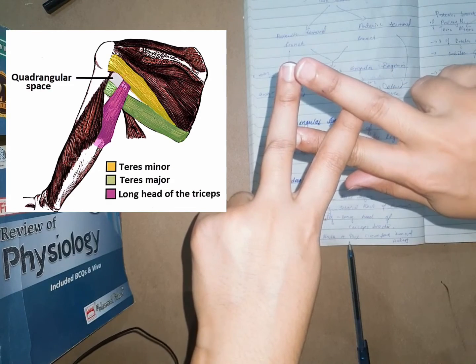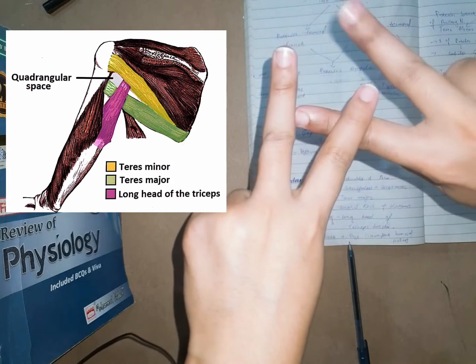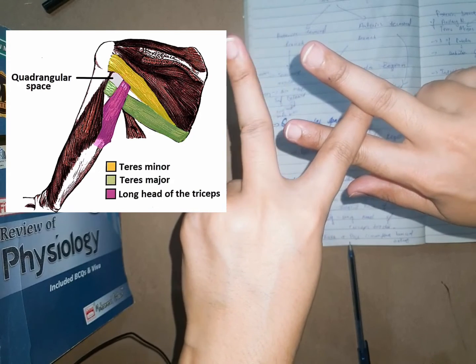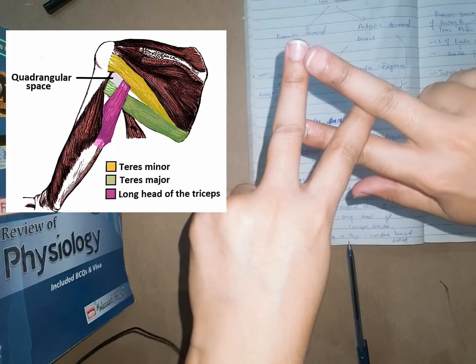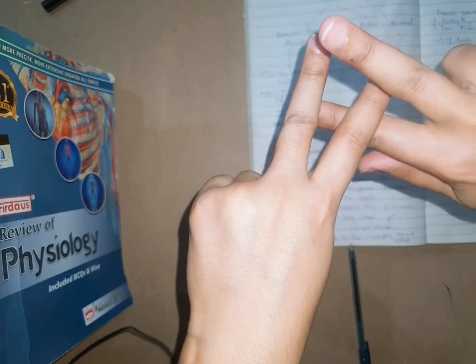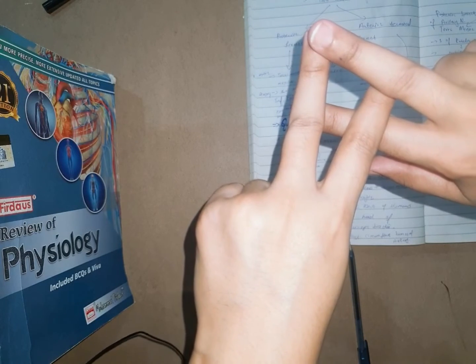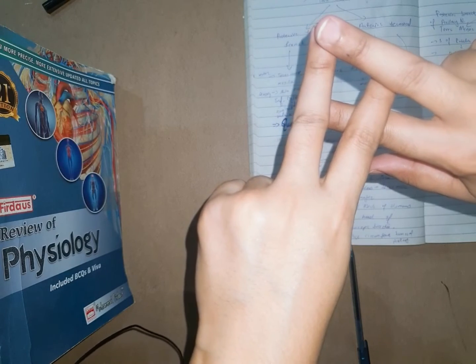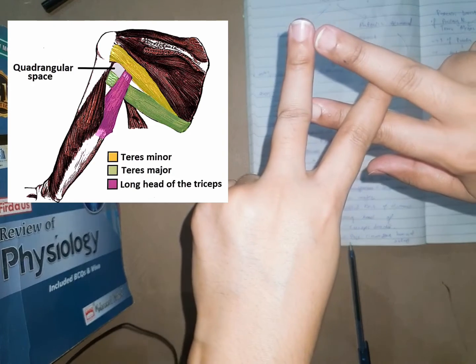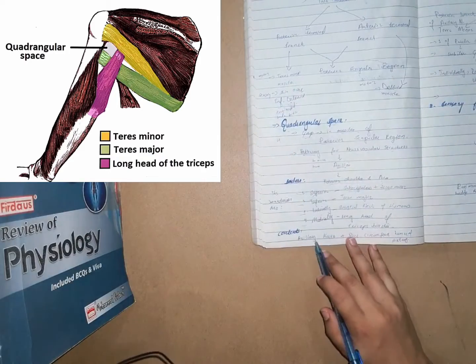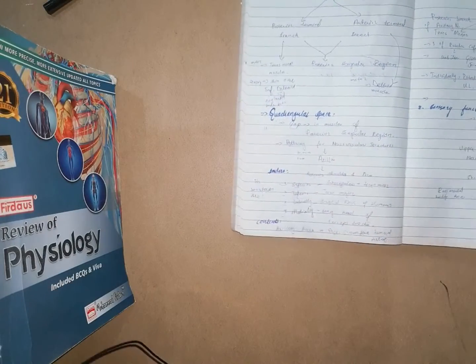To summarize the quadrangular space borders: the superior border is formed by the teres minor muscle and the subscapularis muscle. The inferior border is formed by the teres major muscle. The medial border is formed by the long head of the triceps brachii muscle. The lateral border is formed by the surgical neck of the humerus. The contents are the axillary nerve and the posterior circumflex humeral artery.